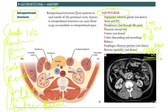An important orientation note: the IVC, inferior vena cava, lies on the right side of the vertebral body, so on any image the IVC will always be on the right side. The aorta is always on the left side.